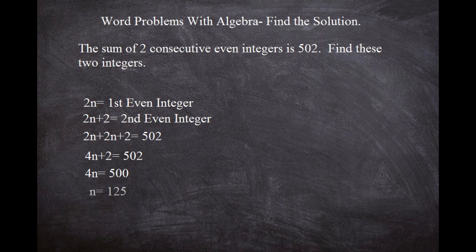Because we divide the 4n by four and we're going to get n, and we divide 500 by four, we're going to get 125. So that's not the answer yet, because remember the first even integer is 2n.